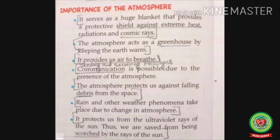Greenhouse gases are present in the air that trap the heat of the sun. Some part of the heat is radiated back to the atmosphere — this is called the greenhouse effect, and it makes our earth warm. The atmosphere also provides us air to breathe.